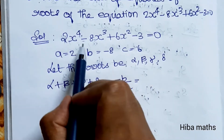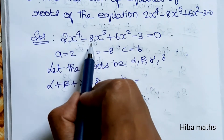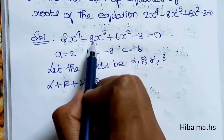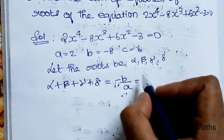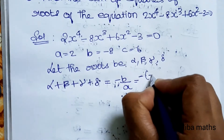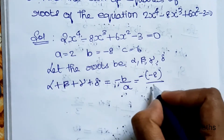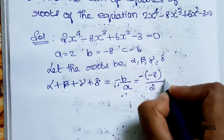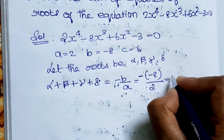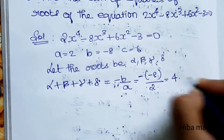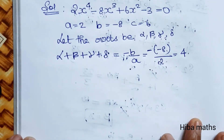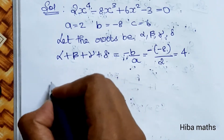Sum of the roots equals minus of minus 8 divided by 2. Minus into minus gives plus 8, and 8 by 2 is equal to 4. So the sum of the roots is 4.